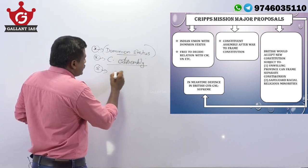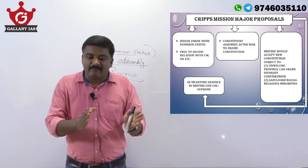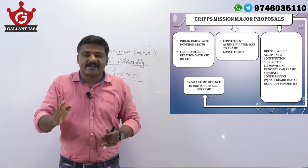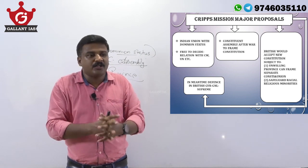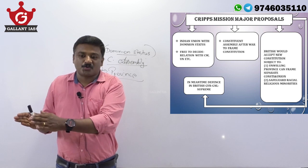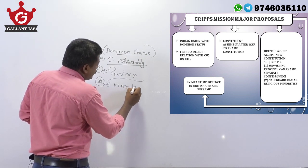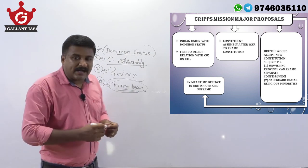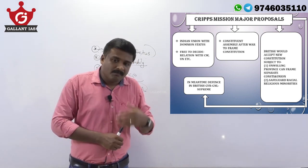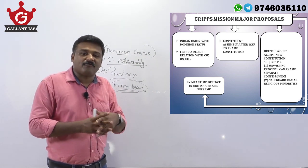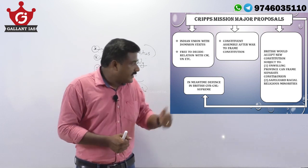Another proposal was that if any province wished to keep away from the Union Constitution — from Union India — they could frame a separate constitution and form a separate union. So any province not willing to join the Indian Union could remain separated and frame its own constitution. Additionally, the interests of minorities would be safeguarded before transferring power and before accepting the new constitution.